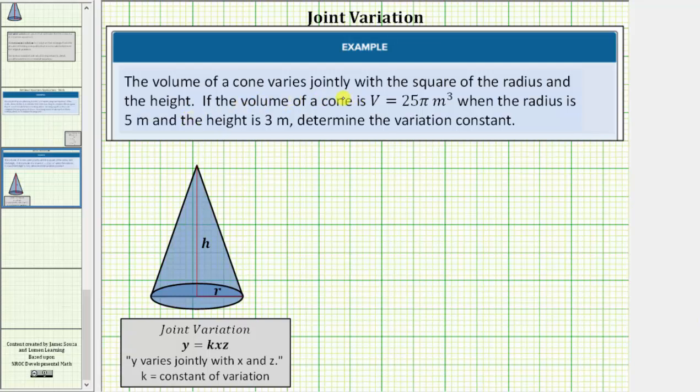The volume of a cone varies jointly with the square of the radius and the height. If the volume of a cone is 25π cubic meters when the radius is 5 meters and the height is 3 meters, determine the variation constant.